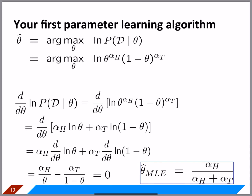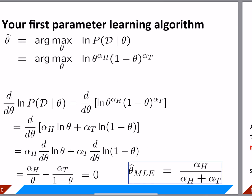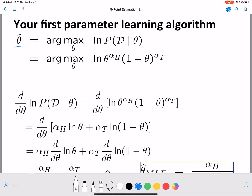Now, theta-prime is the MLE estimate of theta. We know that p of D given theta follows a binomial distribution, so we substitute the binomial expression in. With the log in front, we can split this into two terms: log of theta raised to alpha_h becomes alpha_h times log theta, and the multiplication sign translates to a plus, giving us alpha_h log theta plus alpha_t log(1 minus theta).